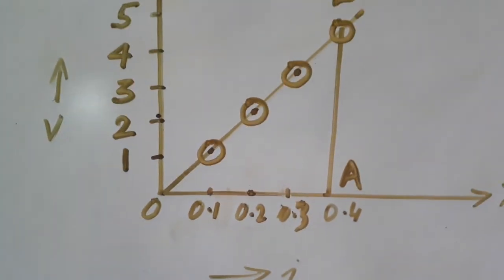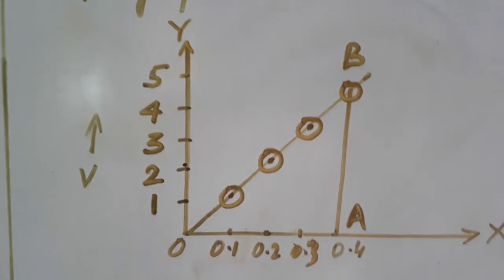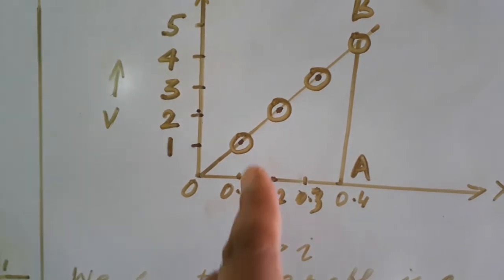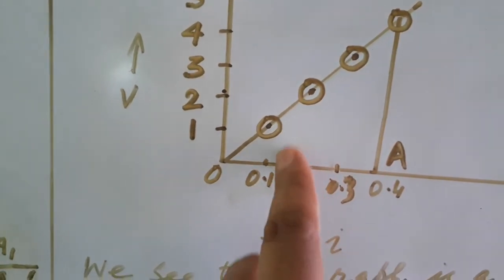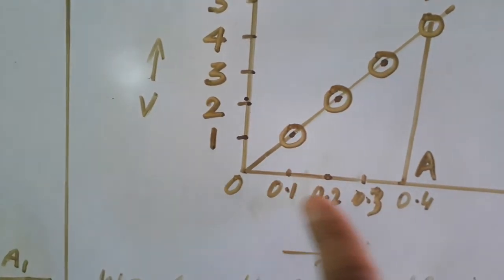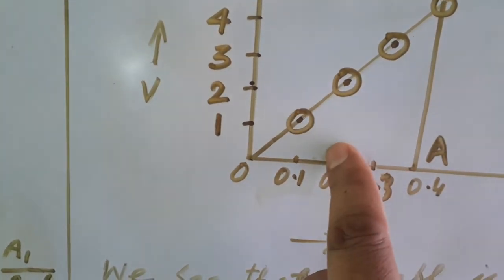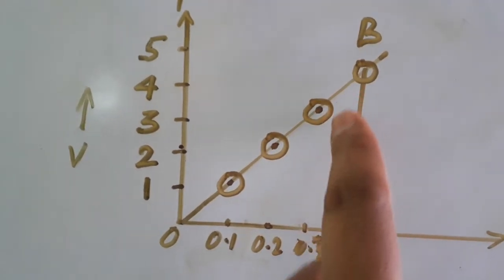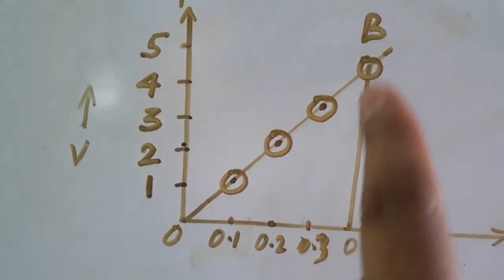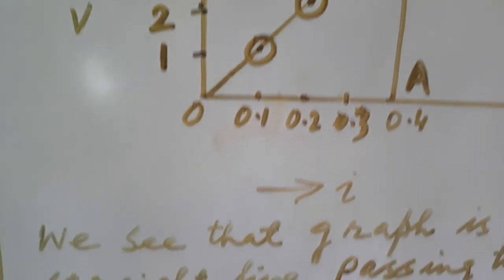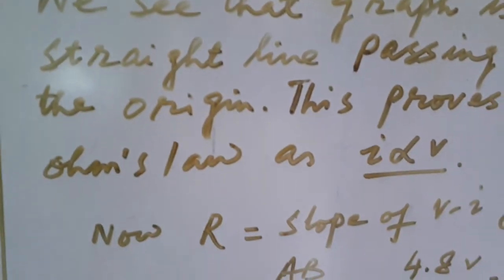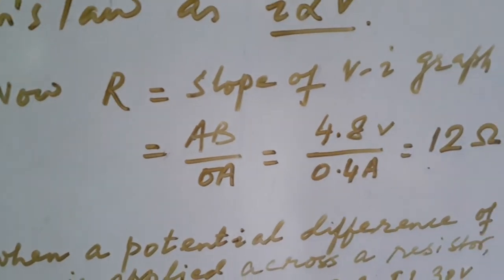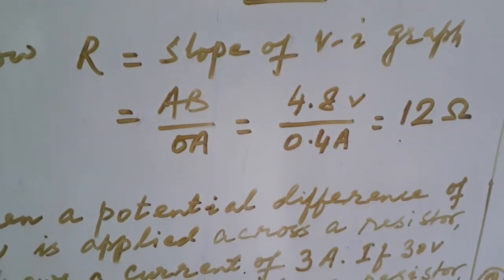Now to find the resistance using this graph, we will have to calculate the slope of VI graph. This slope is also known as tan theta and tan theta is written as perpendicular by base. Perpendicular is AB and base is OA. Calculating the slope of this graph, you will get the resistance. Slope is AB by OA and putting the value, you will get resistance.